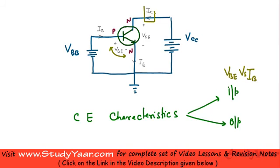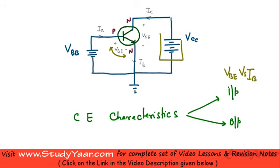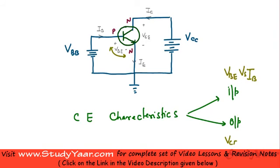Your output characteristic is a measure of how your collector current changes with change in your collector-emitter voltage. This is your collector over here, this is your emitter over here, and if you vary this voltage you are going to vary your collector-emitter voltage. Due to that, how does your collector current vary — you understand it with your output characteristic of a transistor.